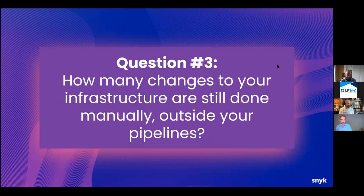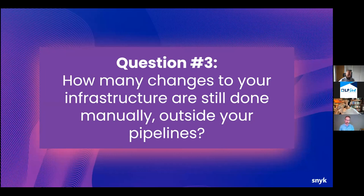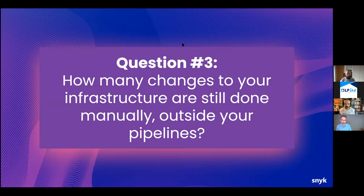Next question: if you're using infrastructure as code, in theory all of your changes should be done in code and deployed through your pipelines. But how often are changes still being done outside those pipelines — done manually? For example, you've deployed something via IaC and then somebody logs into your AWS console and manually changes something, usually quote-unquote temporary.